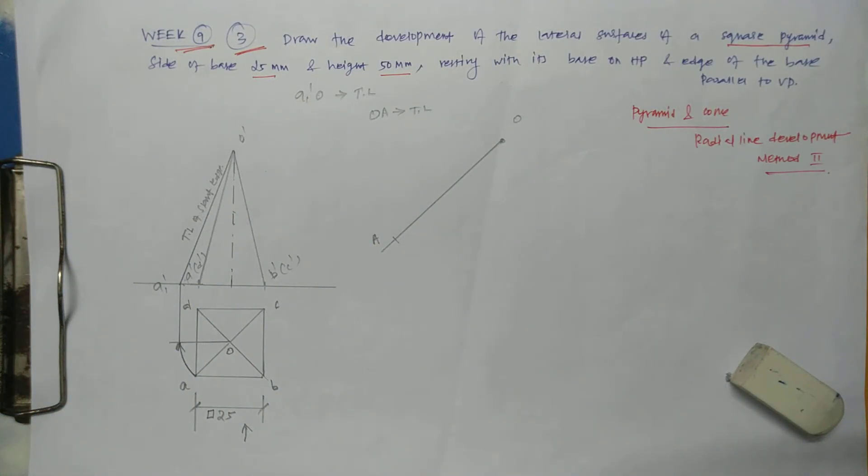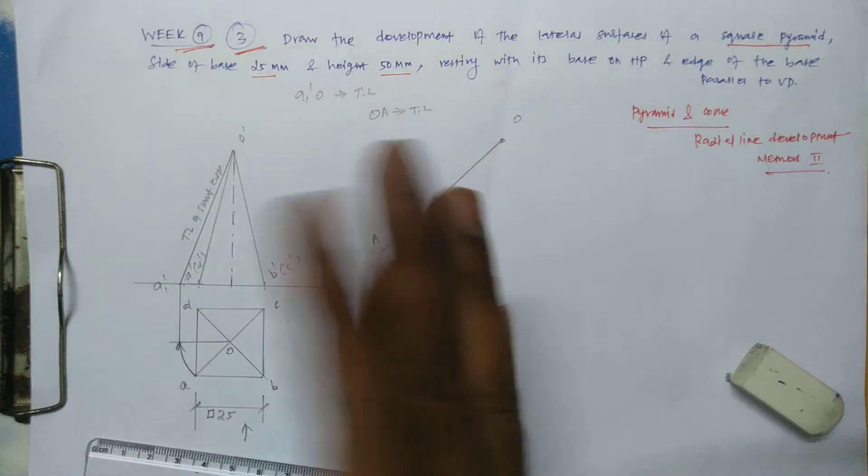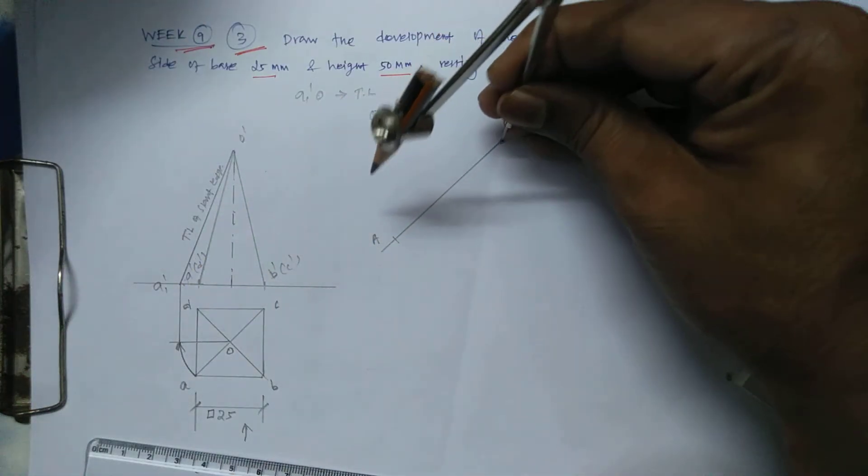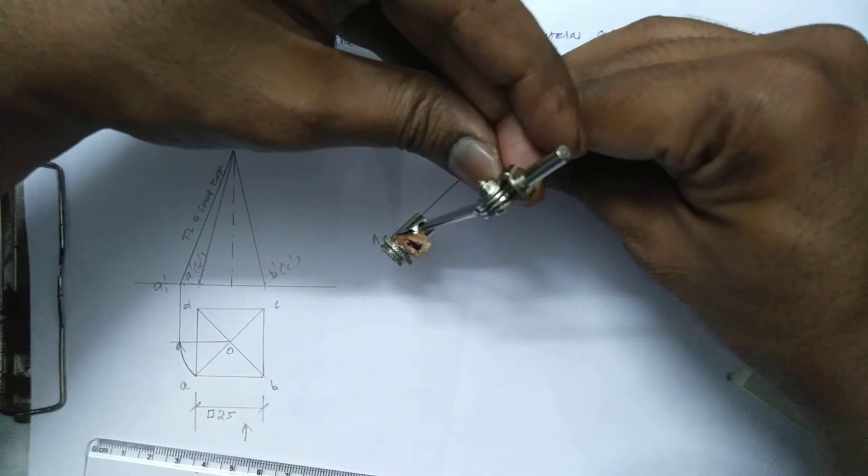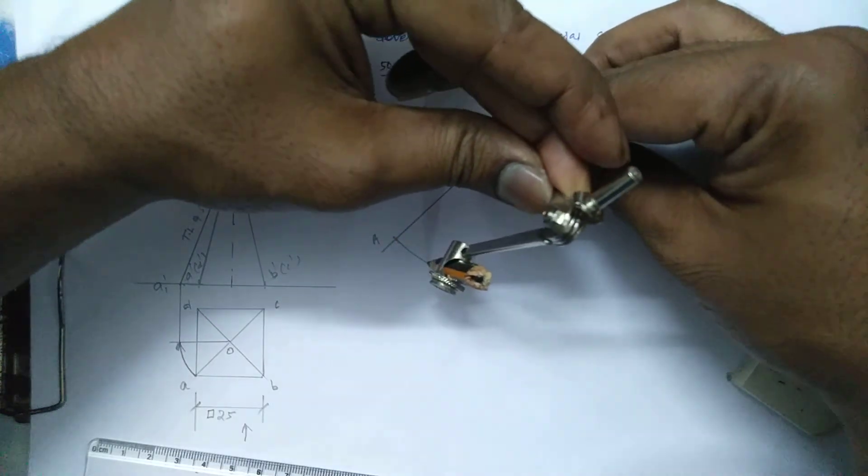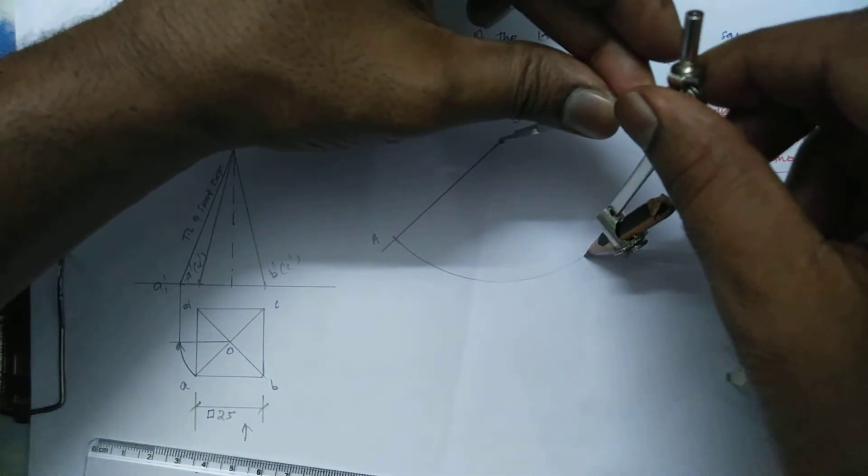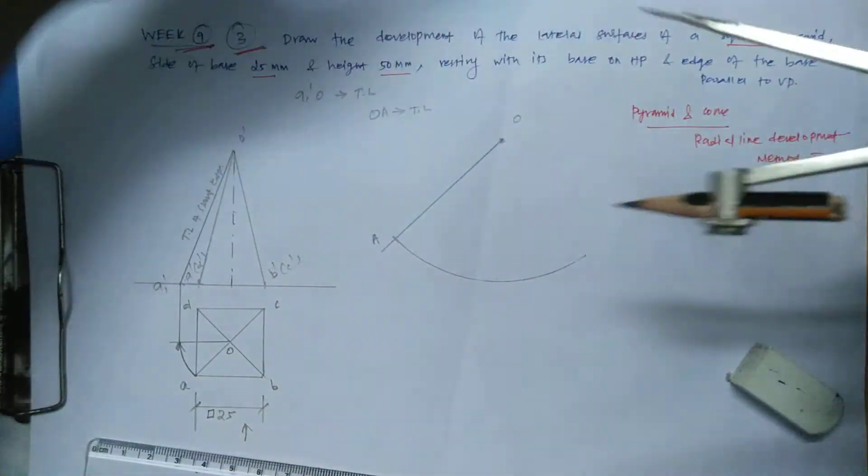So from here we need to draw 25mm, 25mm, 25mm. From here to finish when you are developing it, to finish that one just keep the O as a center the same as radius and just make an arc endlessly.